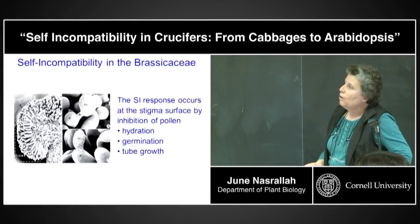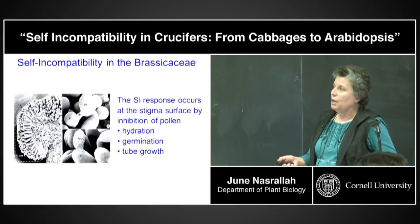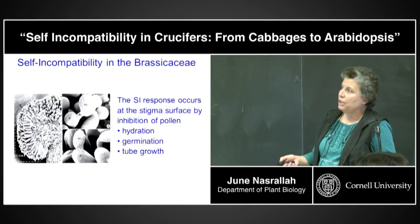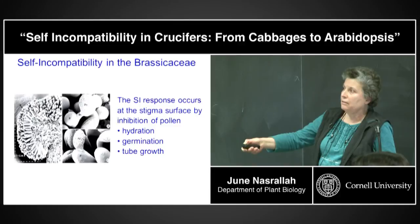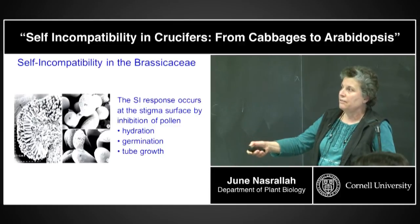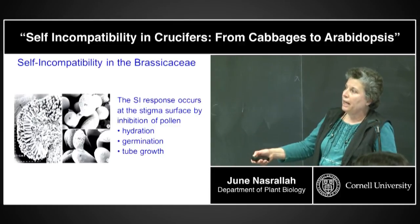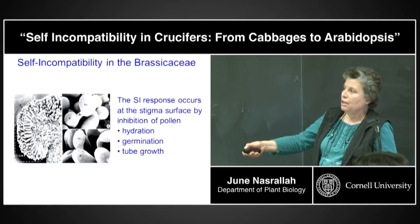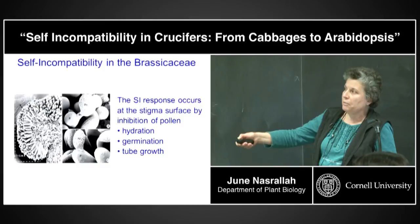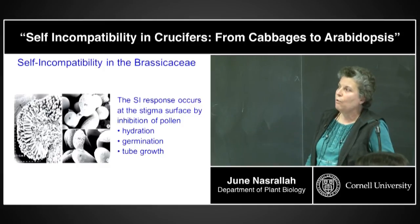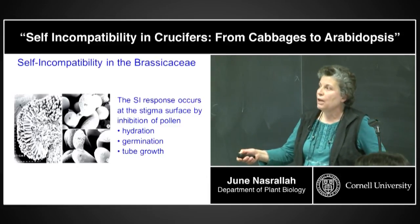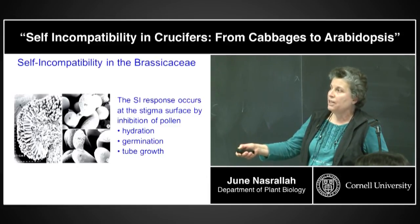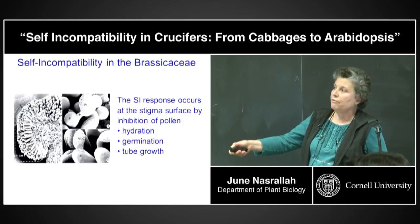What do we know about self-incompatibility in the Brassicaceae in terms of the site of inhibition? It occurs at the surface of the stigma. This is a scanning EM picture of a Brassica stigma showing the elongated epidermal cells that perceive pollen. In a successful pollination, the pollen adheres, then hydrates and germinates, and the tube grows into the cell wall of a stigma epidermal cell. In a self-incompatibility response, this does not happen — there is inhibition of pollen hydration, germination, and tube growth at the surface of these cells.